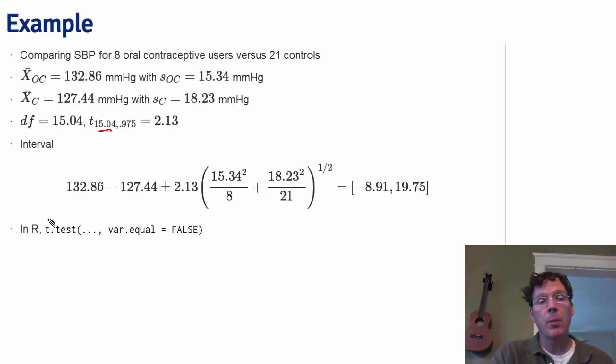Nonetheless, typically when we want an unequal variance t-test, we simply use the R command t.test with var.equal equals false. And that'll do the relevant t-test with unequal variances and produce the relevant t-quantile with unequal variances.